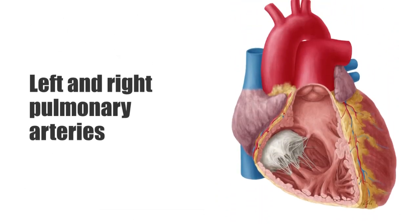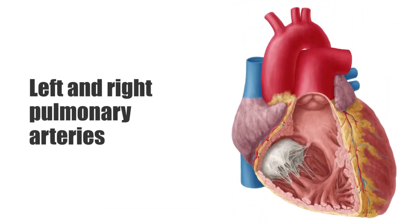The main pulmonary artery originates at the pulmonary valve of the right ventricle. Blood leaves the right ventricle, enters by way of the pulmonary valve, the main pulmonary artery, which then branches off into the left and right pulmonary arteries.